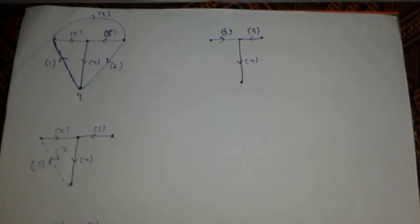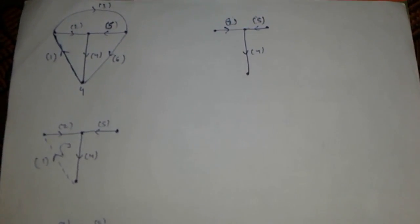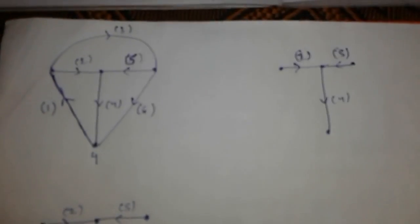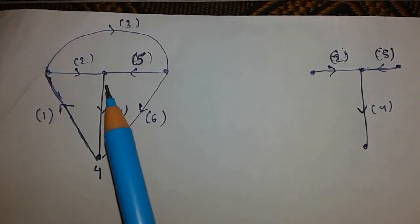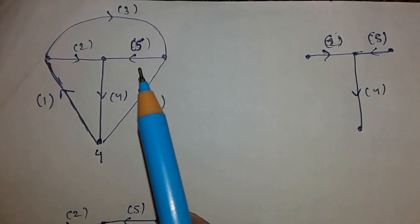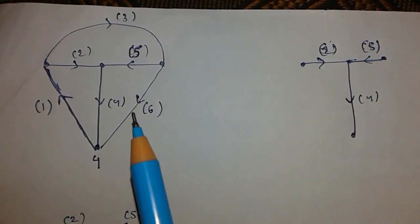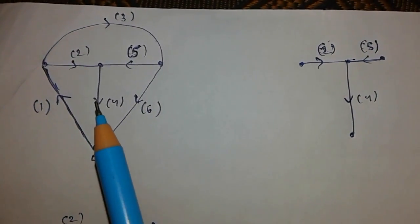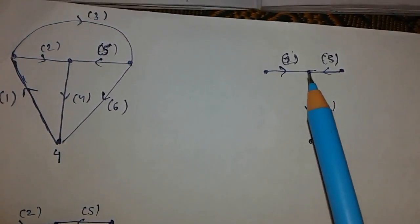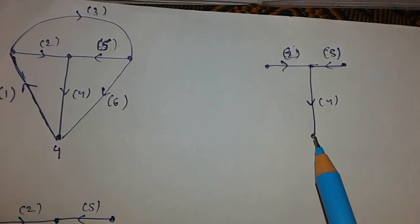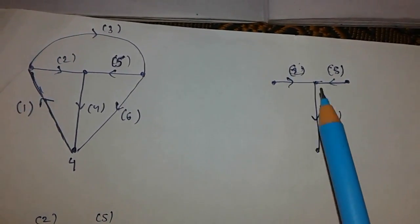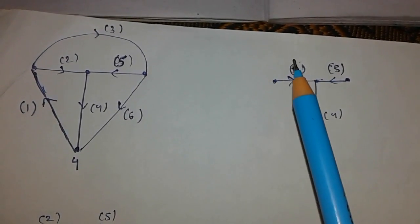Hello everyone, we are going to find out the tie set matrix. A graph is given to you, and there are some rules to find the tie set matrix. First of all, you have to select a tree from this given graph. A tree is simply the connection between nodes with edges, and a spanning tree is basically a tree which contains all the vertices.